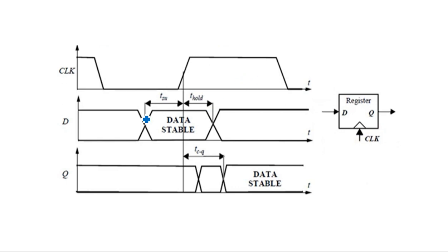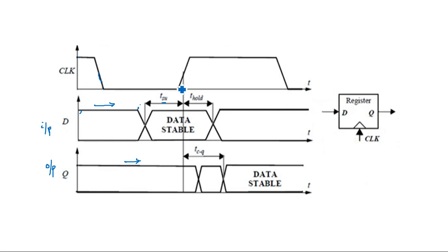Now looking at the timing waveforms for the sequential logic circuit: the clock is changing from 1 to 0, and the previous data is continued. The D signal is the input waveform and Q is the output waveform. When the clock is in the disabled state, even if the input changes there is no change in the output. When the clock changes from 0 to 1, the input also changes from 0 to 1 and the state is changed at that point.